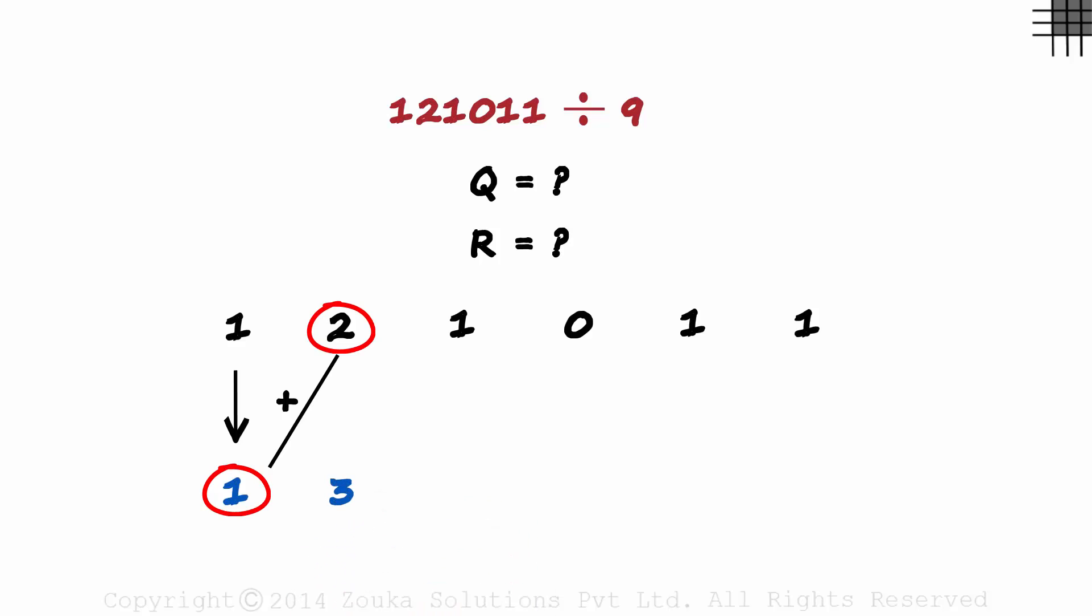1 plus 2 is 3. Then we add this result to the next digit. 3 plus 1 is 4.